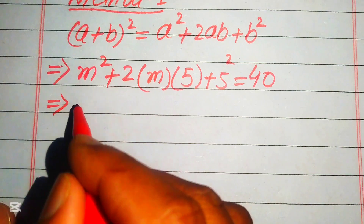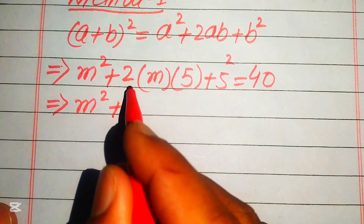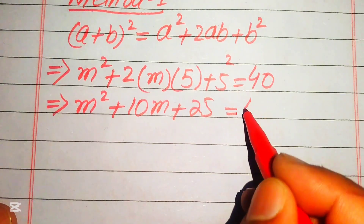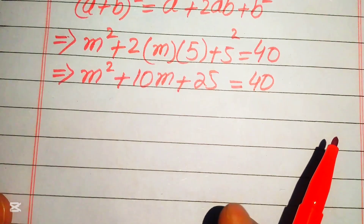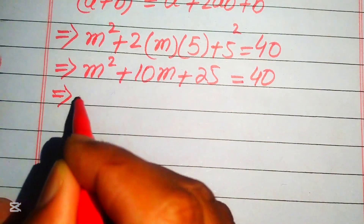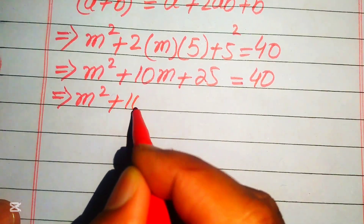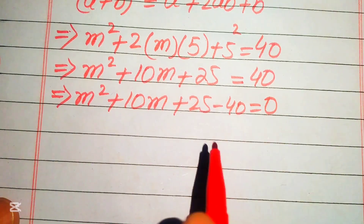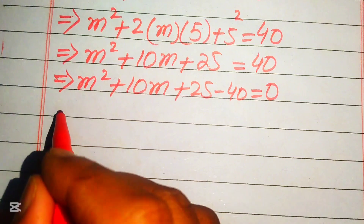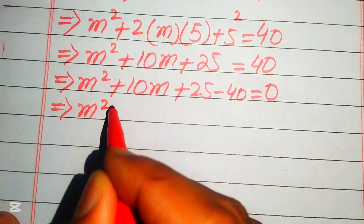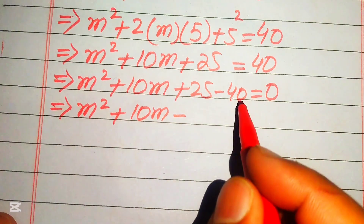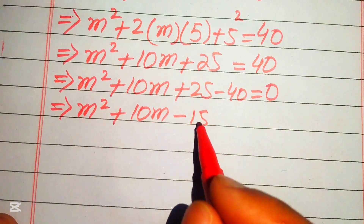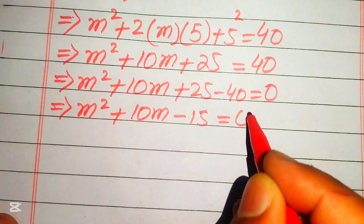Simplifying further: 2 times 5 gives 10m, and 5² equals 25, so the equation becomes m² + 10m + 25 = 40. Moving 40 to the left-hand side gives m² + 10m + 25 − 40 = 0, which simplifies to m² + 10m − 15 = 0.